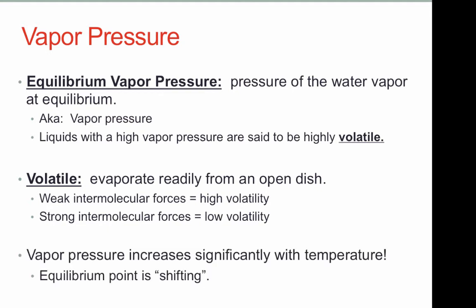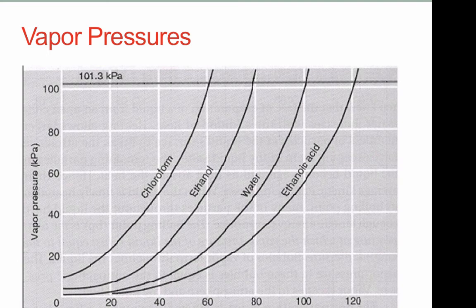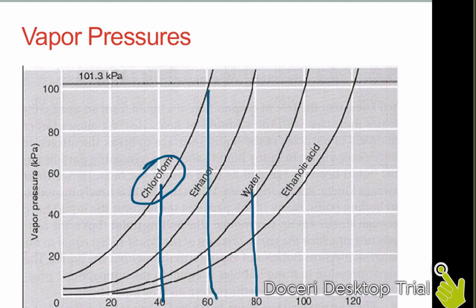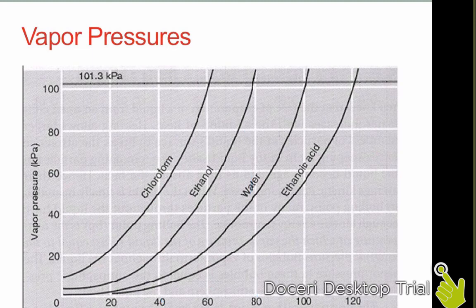Vapor pressure increases significantly with temperature, which should make sense. As you increase the temperature of a substance, more and more of it will evaporate, increasing the number of particles in the gas phase and therefore increasing the vapor pressure. Here's a graph of vapor pressure versus temperature — notice that in every case, as temperature increases, vapor pressure increases. Chloroform has the highest vapor pressure at every temperature, making it the most volatile and therefore having the weakest intermolecular forces.